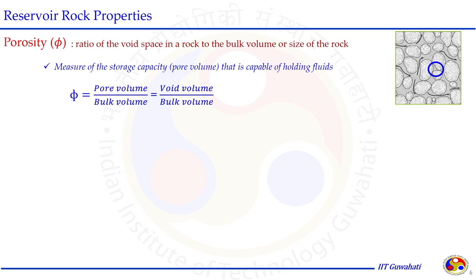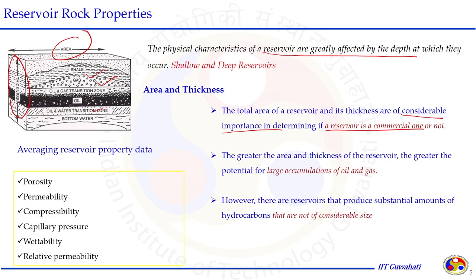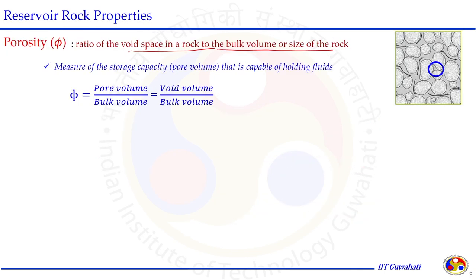Let us discuss one by one all these properties. Starting with porosity: porosity is the ratio of void space in rock to the bulk volume. If we take the dimensions in all three directions — length, width and height — we calculate the bulk volume. But this entire volume is not available to hold hydrocarbon fluid. Only the volume in the form of voids is responsible for holding hydrocarbon fluid. So void space divided by bulk volume is the porosity — a measure of storage capacity.